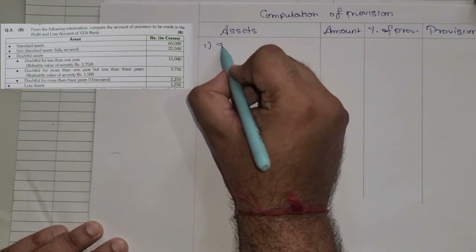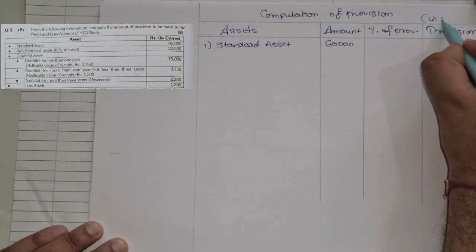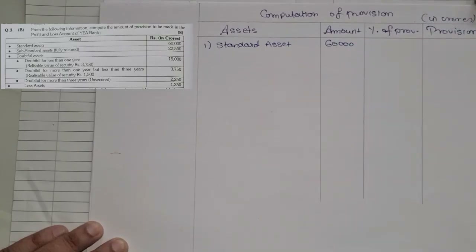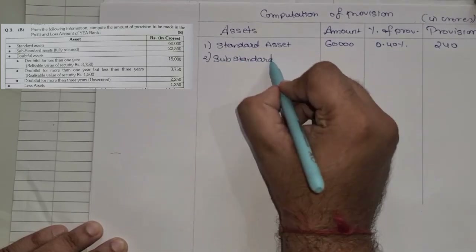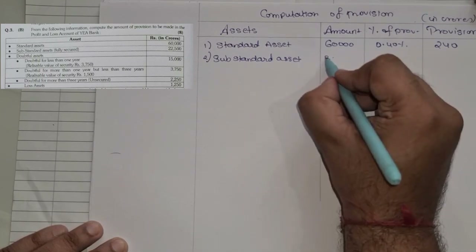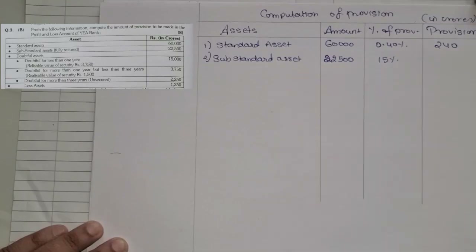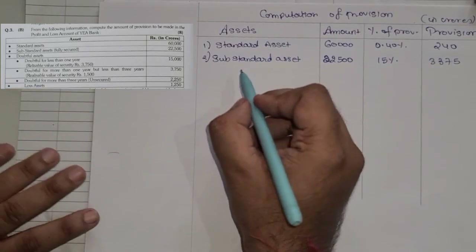Computation of provision. First: standard asset — amount is 60,000 crores. Standard asset provision is always 0.40%, so 60,000 × 0.40% = 240 crores. Second: substandard asset, fully secured — value is 22,500. Rate is 15%, so 22,500 × 15% = 3,375 crores. Now for doubtful assets.